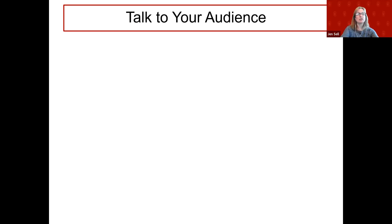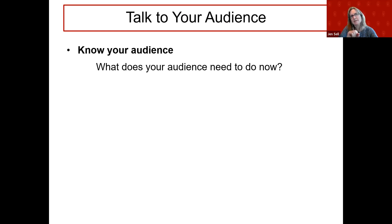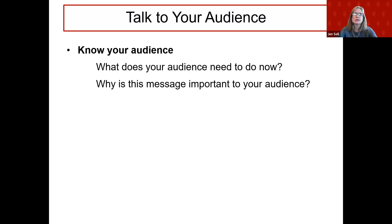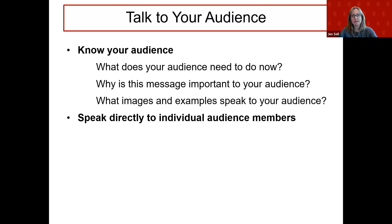One of the very first things we want to keep in mind is that we need to consider our audience before we create our message. I like to think about this question: what does my audience need to know, think, or do after reading my message? We want to start with our call to action — what is the action we want them to take — and then explain why it's important to the audience, not just to the author. We engage our audience with examples and, if appropriate, with images that are relevant and culturally appropriate to that particular audience. We want to speak to individuals no matter how big the audience might be.